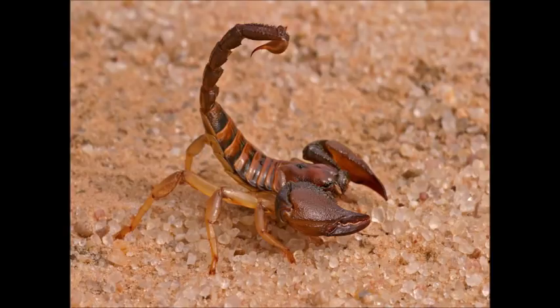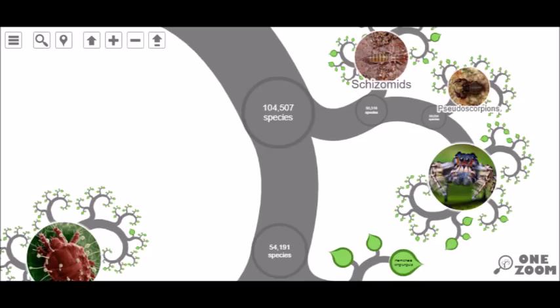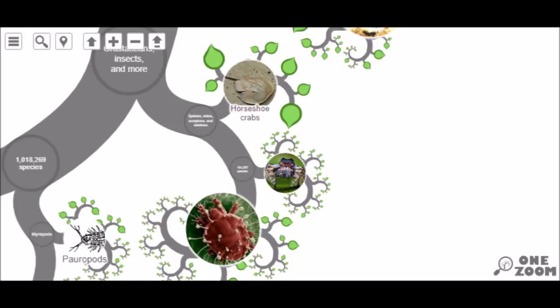Scorpions are classified in an order of arachnids, which are the eight-legged arthropods, called Scorpiones. However, before we get to the scorpions, we have to understand arachnids, but before we can understand arachnids, we must go through chelicerates.